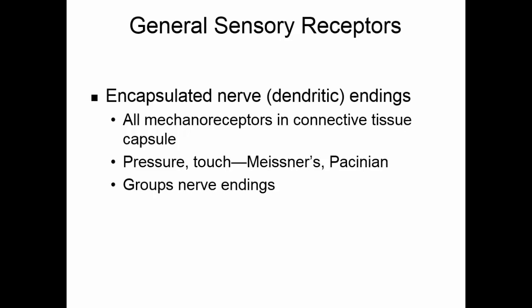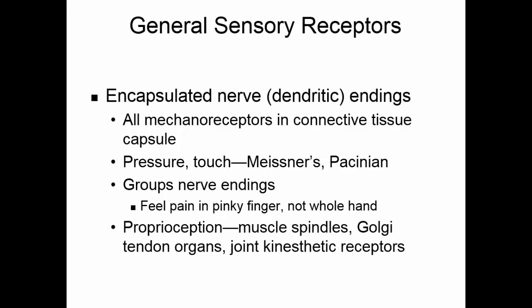Meissner's corpuscles and Pacinian corpuscles are examples of encapsulated nerve endings. There are groups of these nerve endings placed in special locations — this way you feel pain precisely. You can feel something in your pinky finger, but you don't feel it in your whole hand. Proprioception — things like muscle spindles, Golgi tendon organs, and joint kinesthetic receptors — are also encapsulated nerve endings.